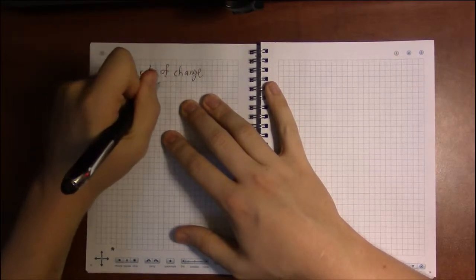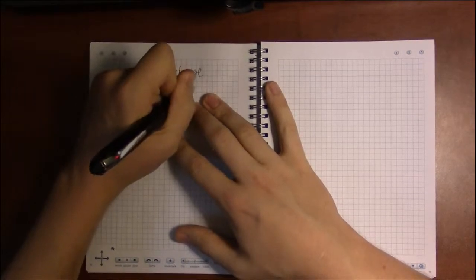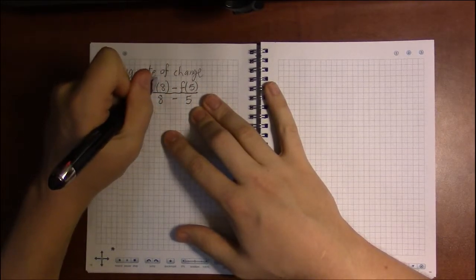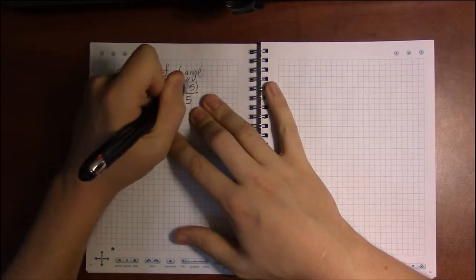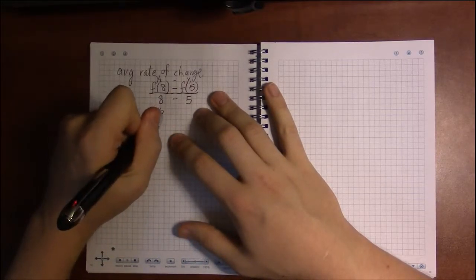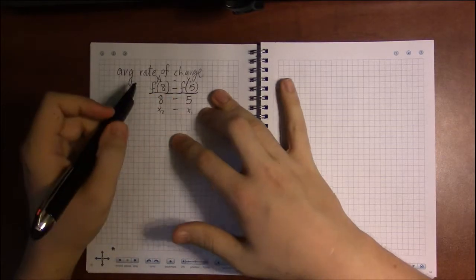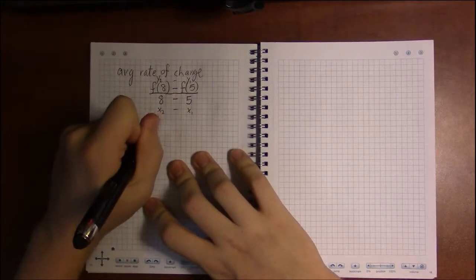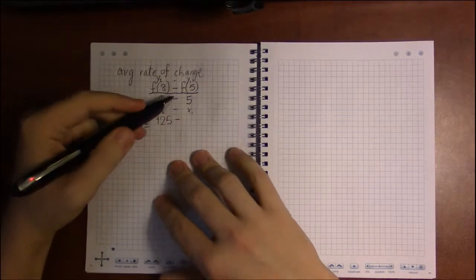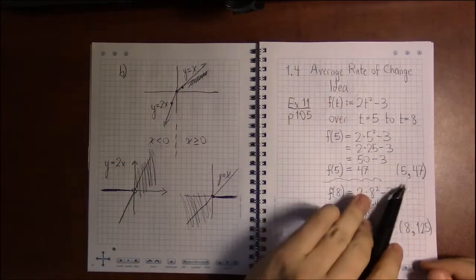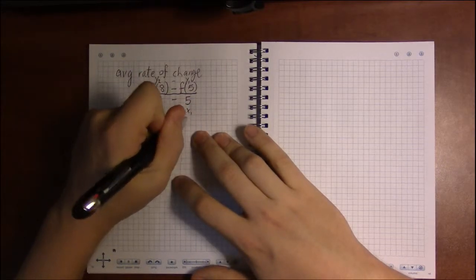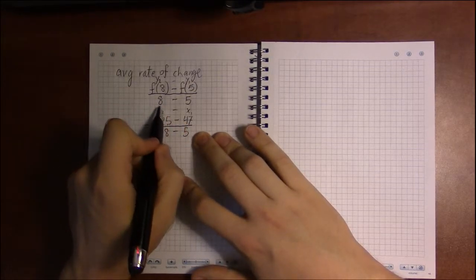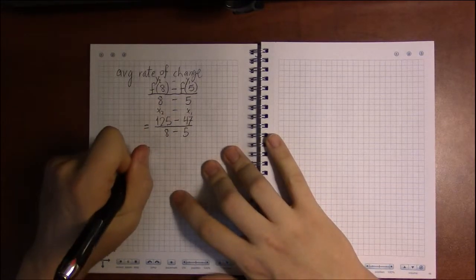So we write this as that the average rate of change is just f of 8 minus f of 5 divided by 8 minus 5. These are the y values—this is y2 minus y1—and 8 and 5 are the two x values, x2 minus x1. So using what we just computed, we know that f of 8 is 125 and that f of 5 was 47.